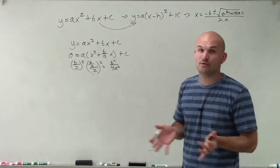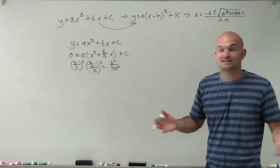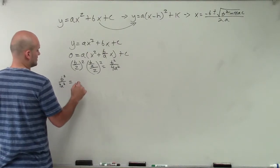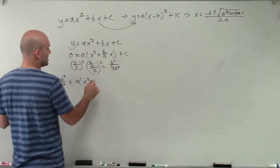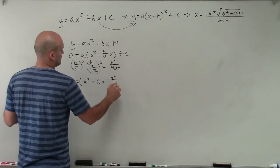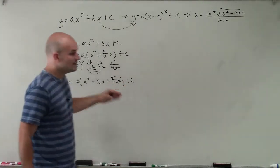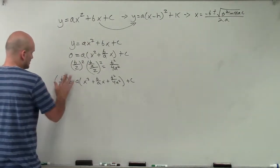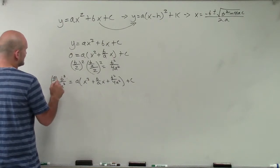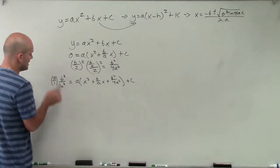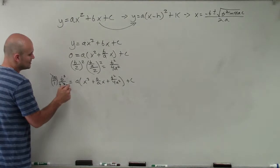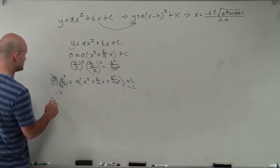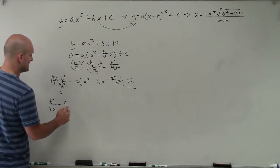There are a couple of different ways to proceed — we can add or subtract on the same side, or we can add b squared over 4a squared on both sides, which is what I'll do. I add it inside the parentheses as well. When completing the square with an a out front, if I multiply a times b squared over 4a squared, I also have to multiply by a on the other side, so the a and a squared reduce, leaving 4a in the denominator. Then I subtract c from both sides, leaving b squared over 4a minus c on the left.